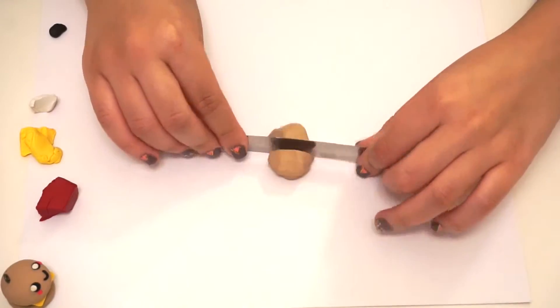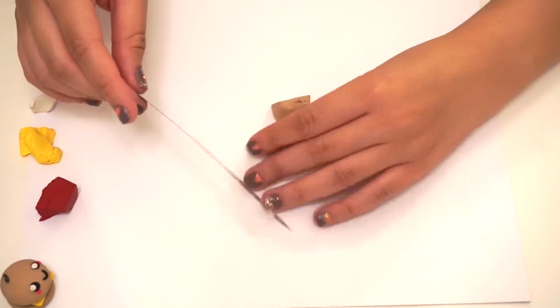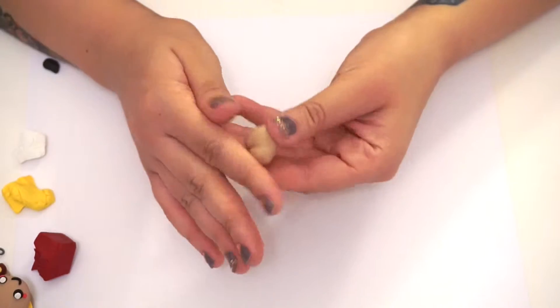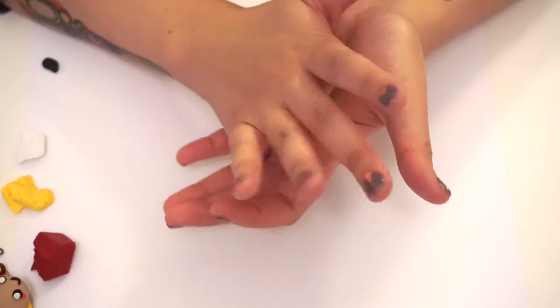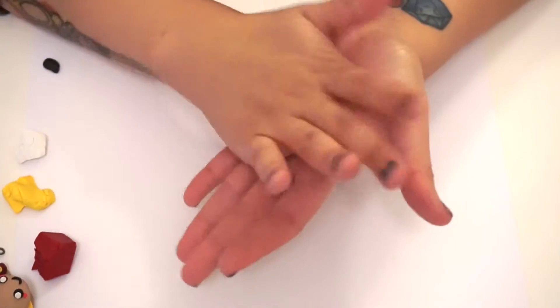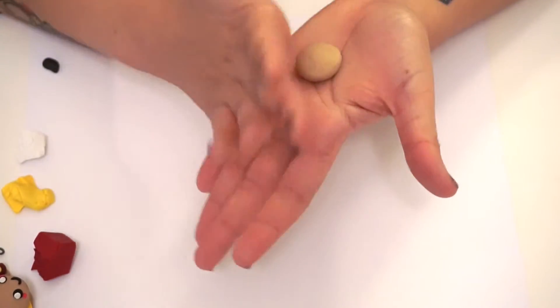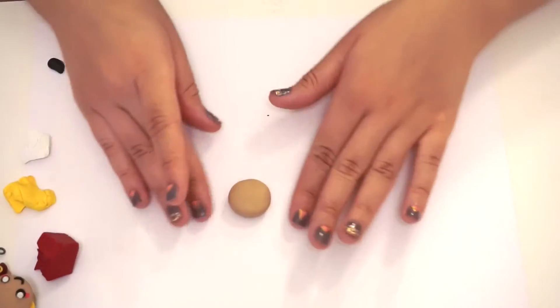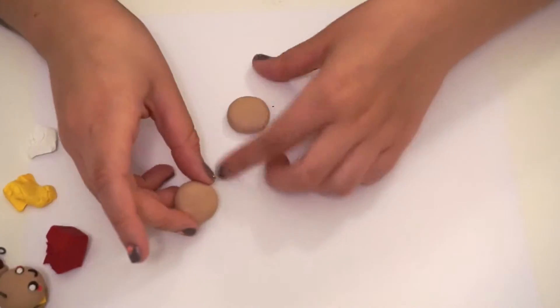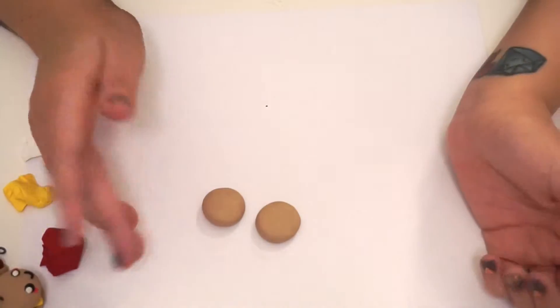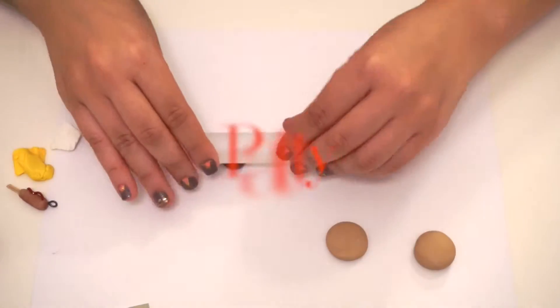You're going to roll it into a ball and cut out equal halves so the bun can be the same size. And then you're just going to roll it and press it into your hands to make a dome shape for the buns. You're going to do that twice. Just make sure that they're both the same size and that they fit on top of each other.